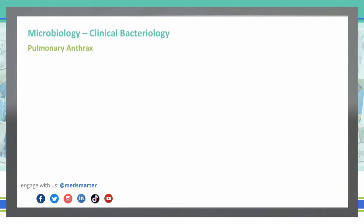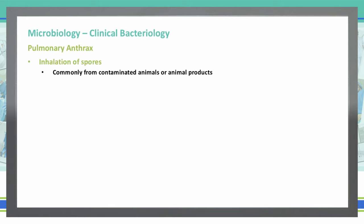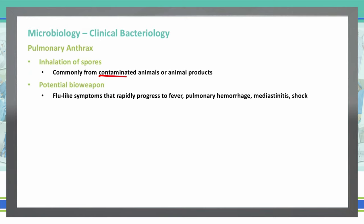The last thing we'll talk about today is pulmonary anthrax. We know anthrax can manifest through cutaneous methods, but it can also manifest through a pulmonary method. How do we get anthrax in our lungs? We inhale the spores. This is how animals and humans come in contact with these spores — through inhalation — typically from contamination from animal products or other animals. We do know it is a potent bioweapon, and we can see flu-like symptoms in patients exposed to anthrax in the inhalation form.